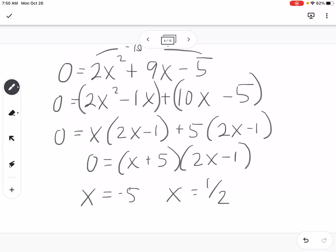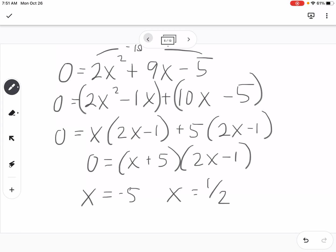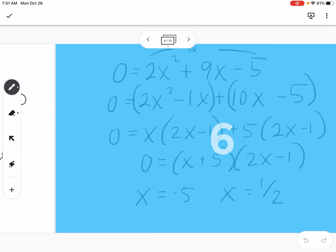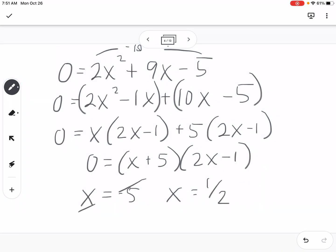Now with logs, you can't take the log of a negative number, so if we go back to our original equation here, if I plug in negative 5 to any of these, I'm going to get a negative number, and I can't take the log of a negative number. That means that negative 5 is extraneous, and so our only solution is 1 half.